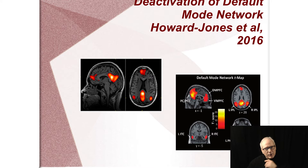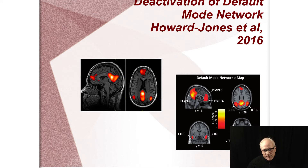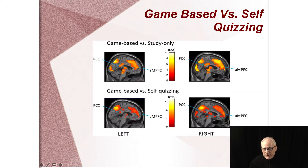Paul Howard-Jones at the University of Bristol has been publishing since about 2011 using functional magnetic resonance imaging studies to look at what occurs in the brain of learners during game versus non-game conditions. These are all fMRI images — we're essentially seeing what parts of the brain are lighting up as the test subject is thinking. These little regions are called default mode networks — parts of the brain that shut off our focus on the external world and allow us to make things into procedures so we don't have to pay attention.